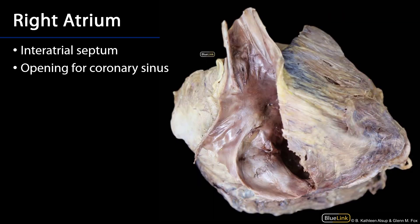Here's another view of the right atrium, more from the right border of the heart. We can still see the superior vena cava and the right auricle. We can see the interatrial septum, which is the wall between the right and left atrium. In the developing fetal heart, this is two membranes with a space between them called the foramen ovale.